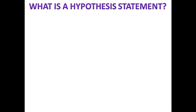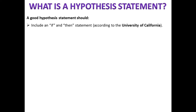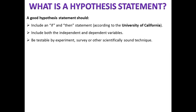If you are going to propose a hypothesis, it is customary to write a good statement. A good hypothesis statement should include an if-and-then statement according to the University of California. It should include both independent and dependent variables. It should be testable by experiment, survey, or other scientifically sound technique. It should be based on information in prior research, either yours or someone else's.